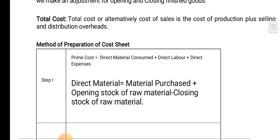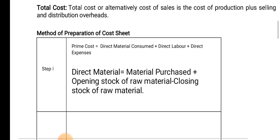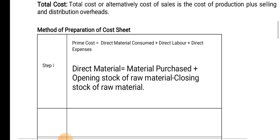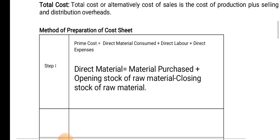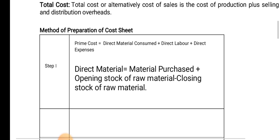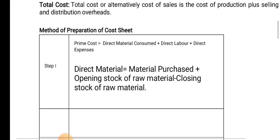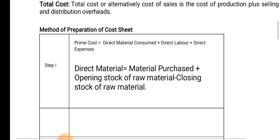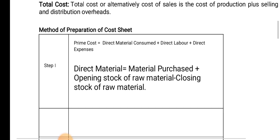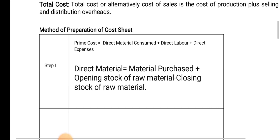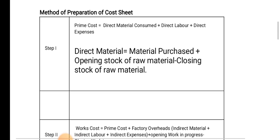Now, the method of preparation of cost sheet. The cost sheet is the most important method. Step 1: Prime cost. Direct material, direct purchase, opening stock of raw material, closing stock of raw material, direct wages, direct expenses — this gives you prime cost.